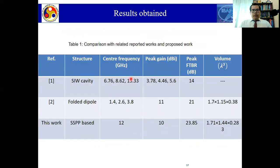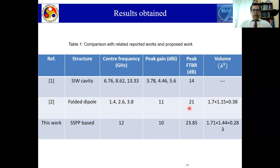Here is a comparison of our work with Reference 1 (SIW cavity antenna) and Reference 2 (folded dipole). The center frequencies are 13.33 GHz, 3.8 GHz, and our antenna at 12 GHz. The peak gain for Reference 1 is very low at 5.6 dBi; Reference 2 is around 11 dBi; our antenna is around 10 dBi. The key parameter of front-to-back ratio shows our antenna achieves the highest value at 23.85 dB. Additionally, our antenna has the smallest size compared to the other two.